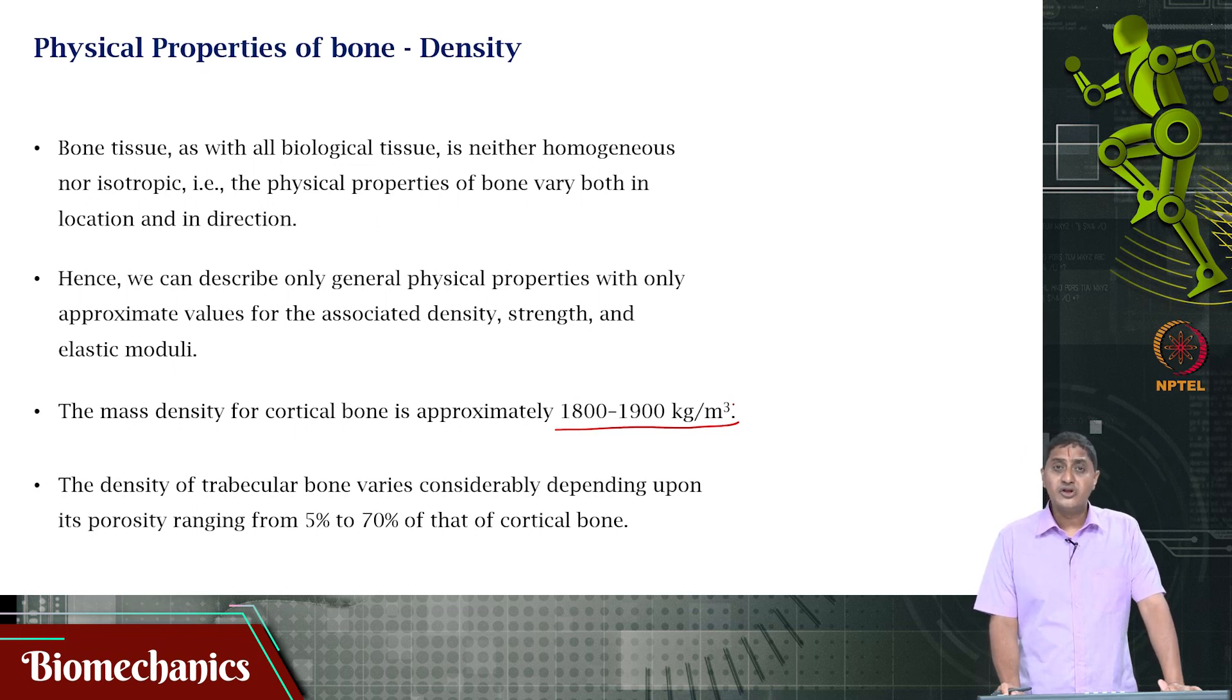The density ranges from 5 percent to 70 percent of the cortical bone, depending on porosity. That means it can be really light or less dense, or it can be almost as dense as cortical bone. This is a function of the amount of holes or porosity present in the network structure. It turns out that the stronger the bone, the less porosity will be present.